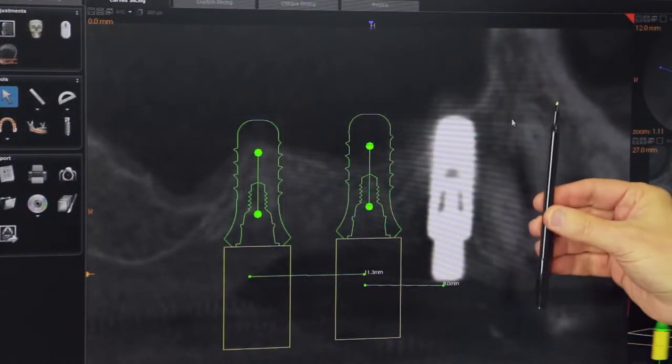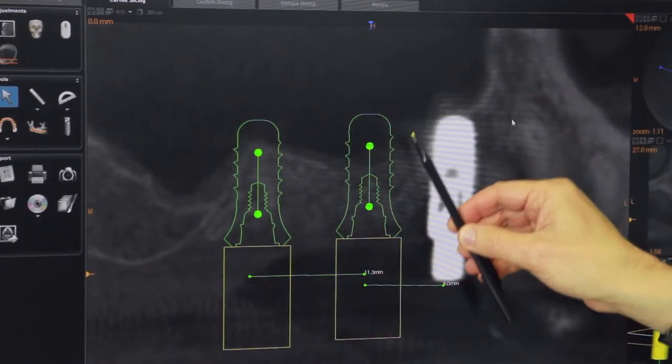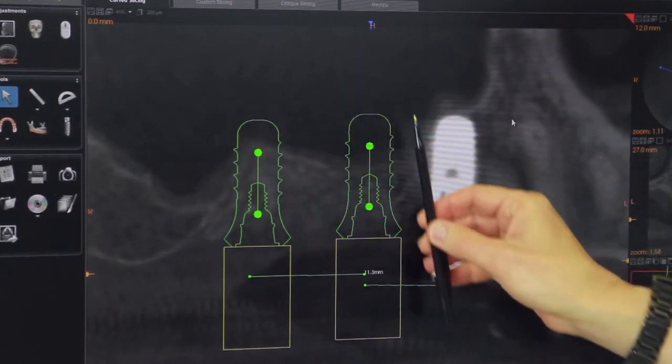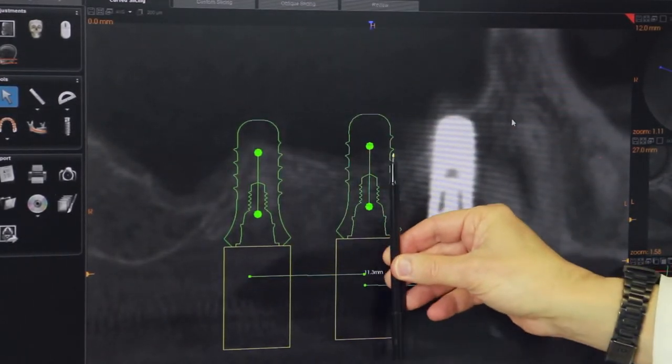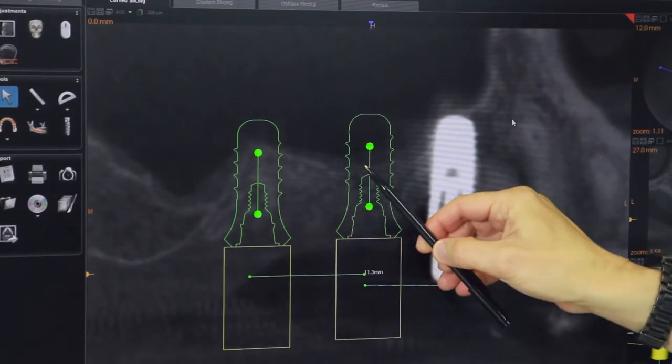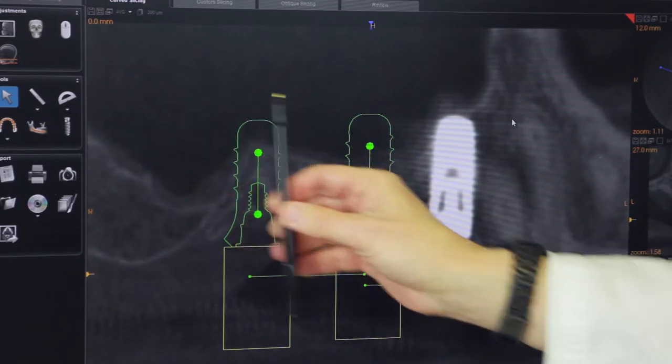Equally as important is this scan of the upper jaw bone which clearly delineates the borders of the maxillary sinus, which is an air cavity. As we can see here, if we put our implants in virtually, we can see that they would protrude into the sinus. We wouldn't know this without a three-dimensional scan.